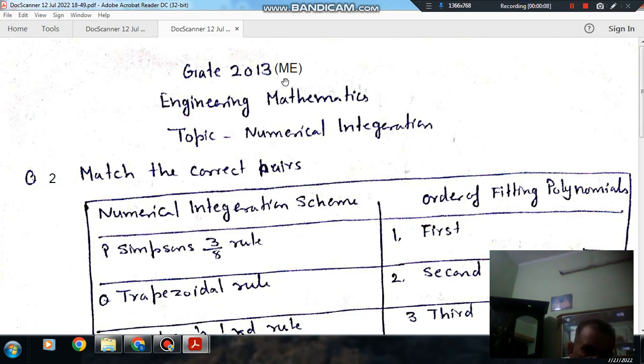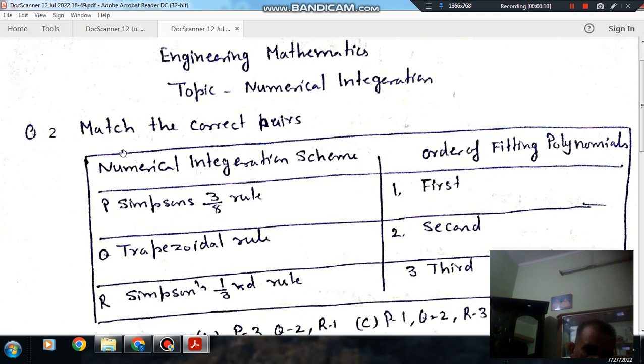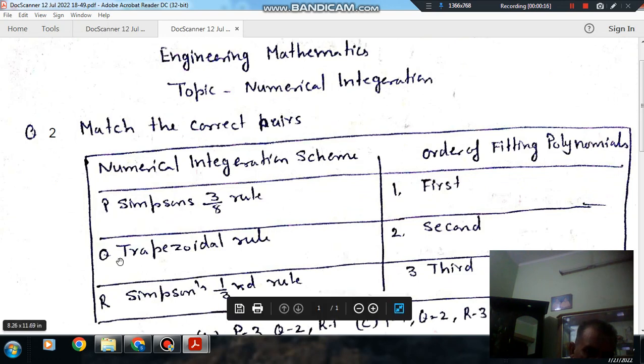Question number 2 from GATE 2013 ME. Match the correct pairs in numerical integration scheme. P: Simpson's 3/8 rule, Q: Trapezoidal rule, R: Simpson's 1/3 rule.